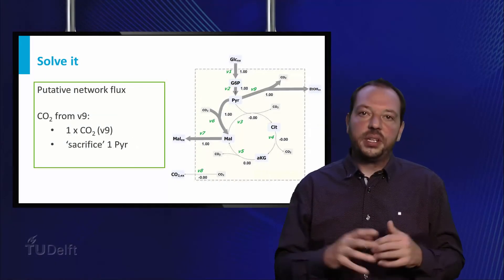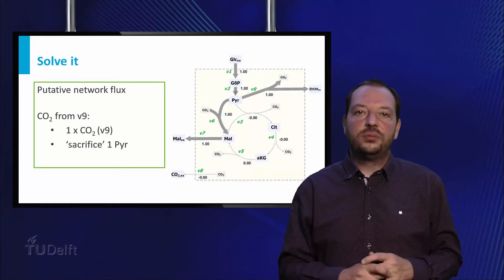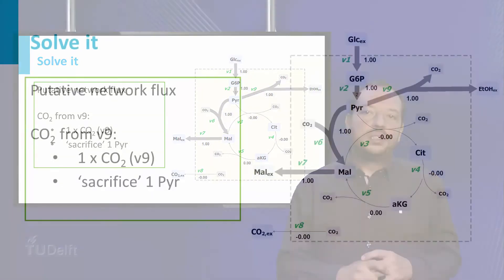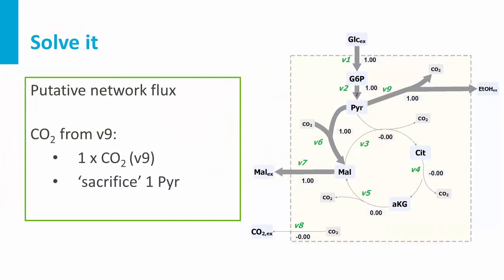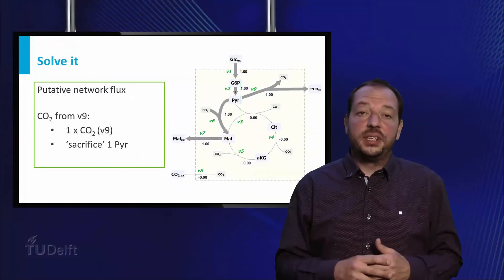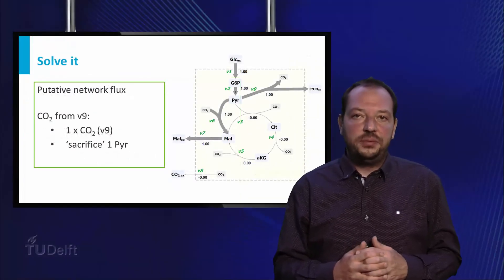In the case of the network using V9 as source for CO2, the branch at pyruvate has to split one to one in V9 and V6. With this split, we obtain a production of one malate per glucose, so you can see that this route will be less efficient.